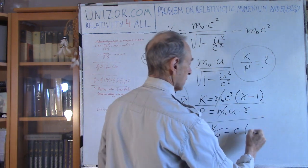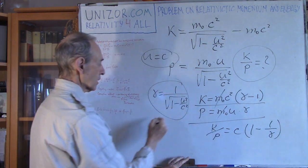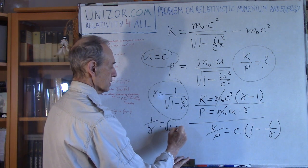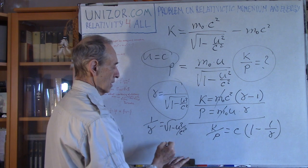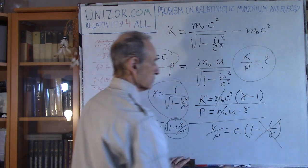How about gamma minus one divided by gamma? Gamma is equal to zero so I cannot divide by zero, but I can rewrite it as one minus one over gamma. One over gamma is square root of one minus u²/c².